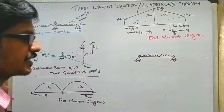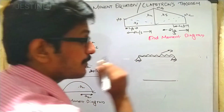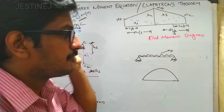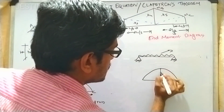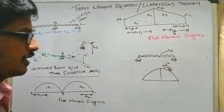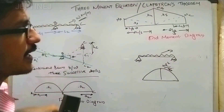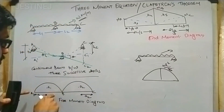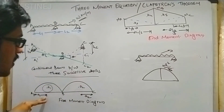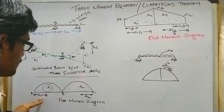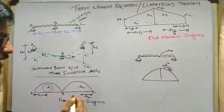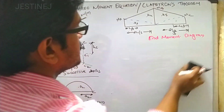In this derivation, we assume a UDL is acting. Calculate the bending moment — for a simply supported beam with UDL, the maximum bending moment is wL²/8. This is the maximum ordinate value. Since UDL acts over both spans, the free moment diagram is a parabola. Mark area A1 and its center of gravity distance as a1, and area A2 with center of gravity distance from support C as a2.